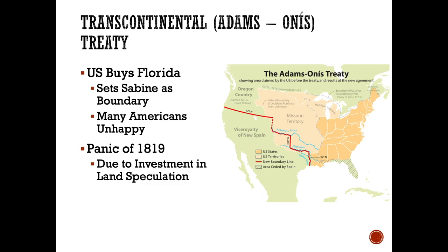In 1819, the United States bought Florida. What this meant was that Florida — the area ceded by Spain — went all the way into what's today New Orleans and over by Louisiana. Andrew Jackson had invaded Florida and killed a couple of British officers, creating the precedent for a possible wider conflict. But American Secretary of State John Quincy Adams was able to meet with Onís, the Spanish foreign minister, and negotiate a treaty. This treaty gave the United States Florida in exchange for money.